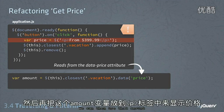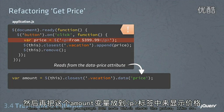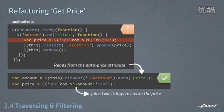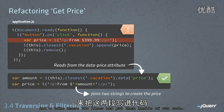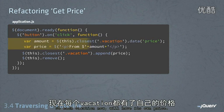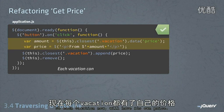Then finally we call the data method to get the price value out of the DOM. We can then use that amount when we construct our paragraph DOM node which shows the price. Let's take these two lines and put them inside of our code so each vacation now will have its own price.